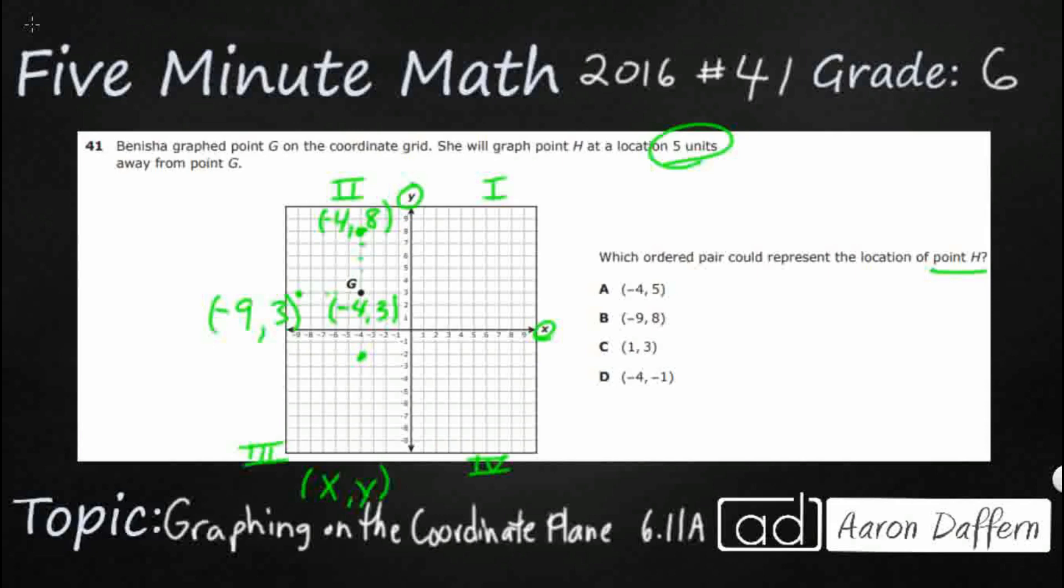Alright, so we crossed the X axis. We didn't change our position along the X axis at all. So we're still at negative 4. But you notice that we went down 5, so we went from a positive 3 down to a negative 2.